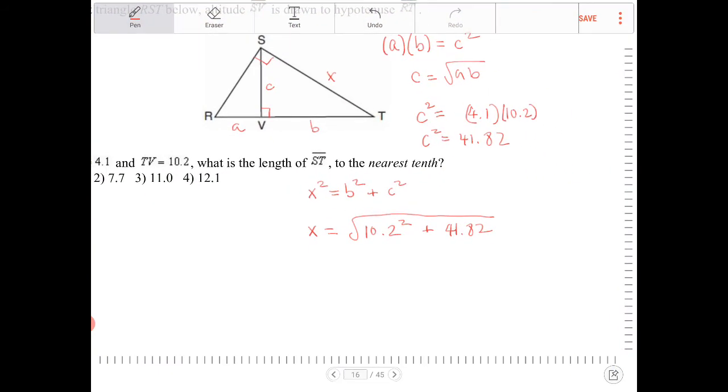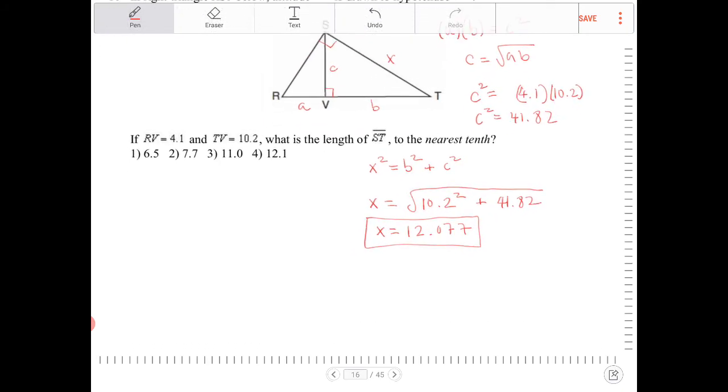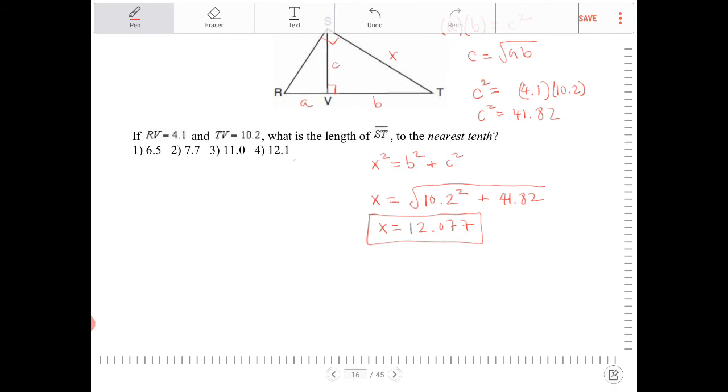I get 12.077. So this is going to equal to 12.077. So to the nearest tenth, that would be 12.1 then.